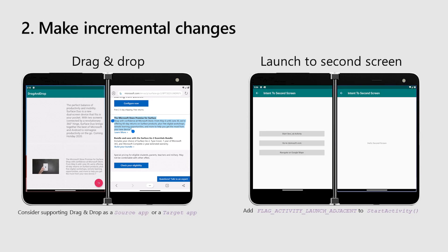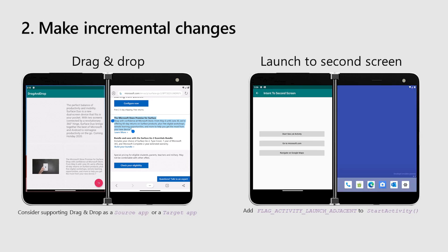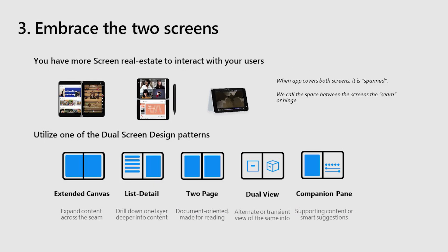You can also think about interactions that your app can do on the other pane with a one-line code change. Adding a flag to the start activity for your app will launch content on the other pane. You could also launch other apps or intents to complete your user flows. Step three. Embrace the fact that you now have two screens available for your app. For that, we have a dual-screen design pattern ready for you to use. Think about the different layouts and different device postures you want to support. How will your app present content in dual landscape, dual portrait, when the device is flipped, or when it's in a tent mode?